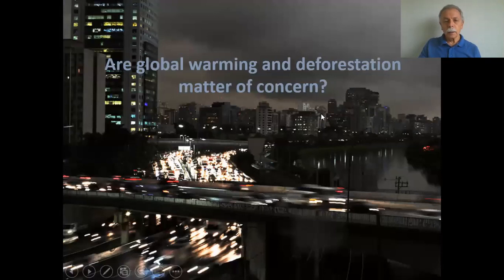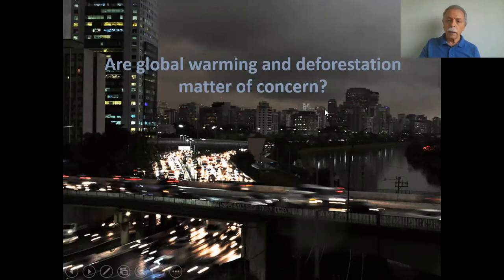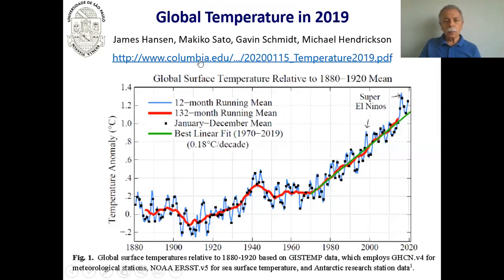The first question to be asked is: are global warming and deforestation a matter of concern? One striking way to ask this question is having this picture of the black rain day in São Paulo almost a year ago — a very striking photograph at around three o'clock in the afternoon in São Paulo. To start answering this question, let me show this plot of the temperature anomaly against year, made by Professor James Hansen and his group at the University of Columbia.